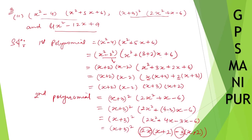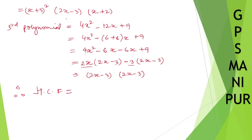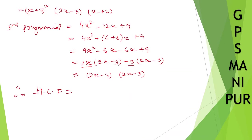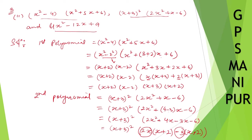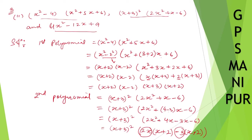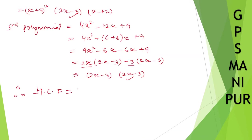To find the HCF, we look for factors common to all three polynomials. The first polynomial has (x+2), (x-2), and (x+3). The second has (x+3) squared, (2x-3), and (x+2). The third has only (2x-3) squared. There is no single factor common to all three — (x+3) is not in the third, and (2x-3) is not in the first — so the HCF is 1.